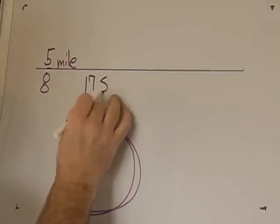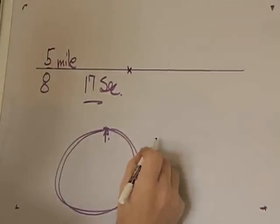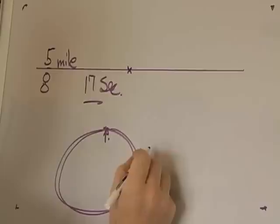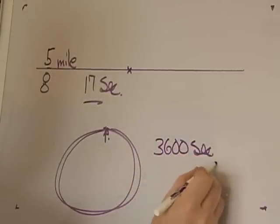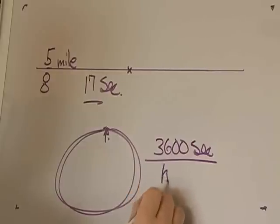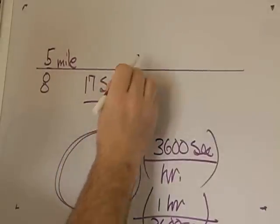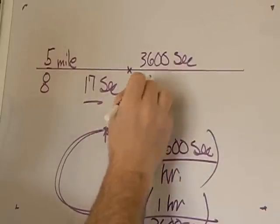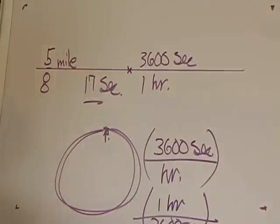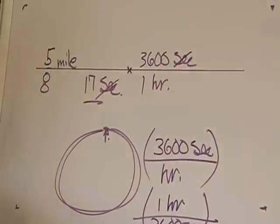So velocity is distance over time — it's 5/8 of a mile over 17 seconds. Now we want to somehow convert seconds into hours, because miles per second doesn't really mean a lot to us. So we want a conversion, and we know that 3600 seconds equals one hour — that's 60 minutes times 60 seconds. So if we use that as our conversion factor and put it on top: 3600 seconds per hour. We've got seconds above and seconds below, and anything divided by itself is one — they essentially cancel out.